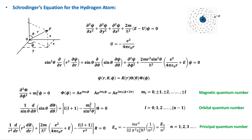Schrödinger's equation in Cartesian coordinates is written in a standard form. The electric potential energy of the proton-electron system for the hydrogen atom is minus e squared over 4π ε₀ r. Due to the symmetry of the atom, it is more convenient to use the spherical coordinates r, theta, and phi rather than Cartesian coordinates.